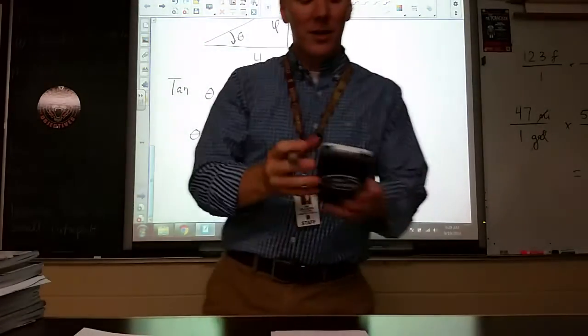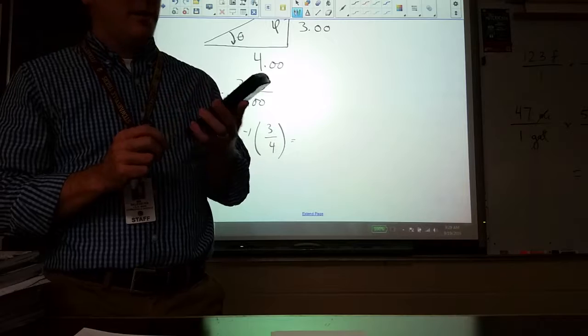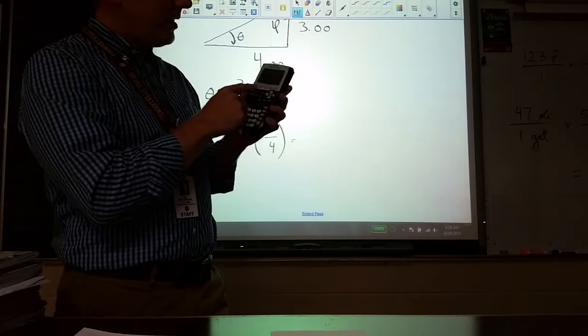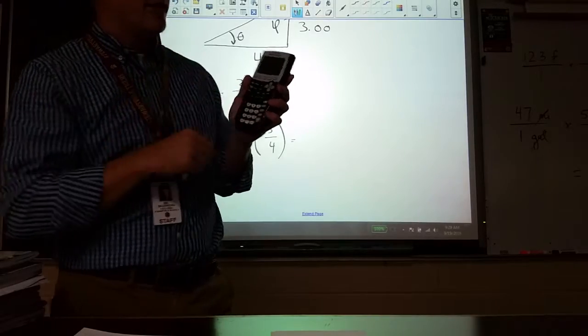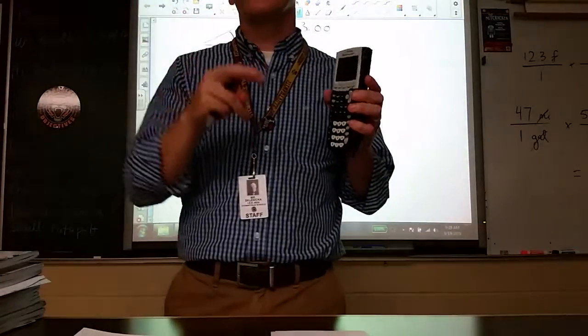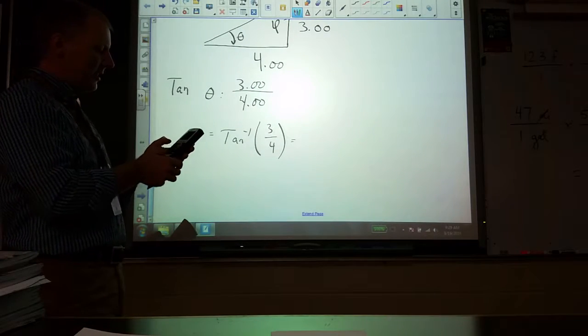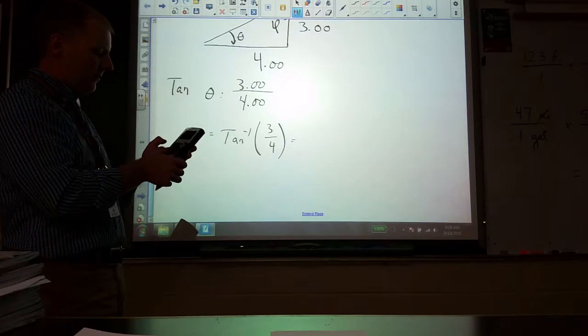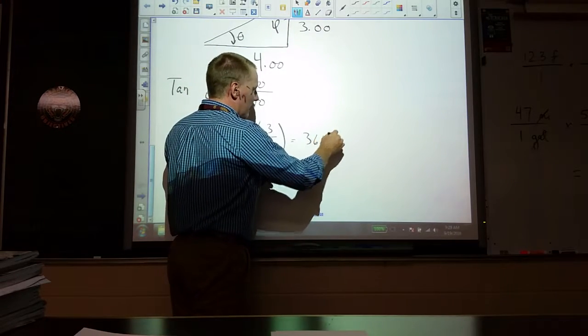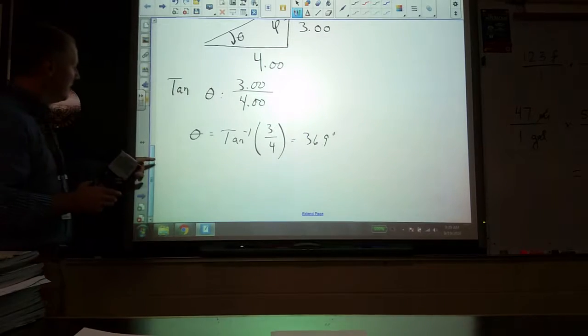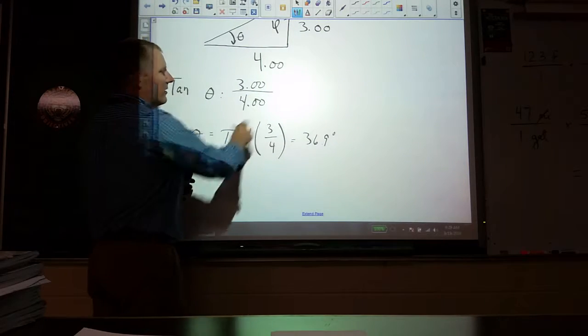Also make sure your calculator is on degrees, which if you hit mode, you can go down and select degree. It's the third line down, hit enter, and then quit out of that. So we take the inverse tangent of 3 over 4, we get 36.9 degrees. I want 3 sig figs because I have 3 here and 3 there.